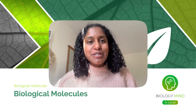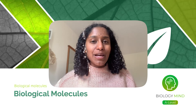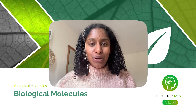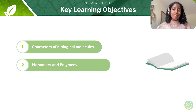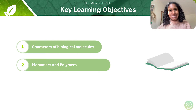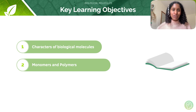Hello there everyone and welcome to this BiologyMind A-level tutorial on biological molecules. This is going to be a really back-to-basics tutorial — mostly familiar stuff building on your GCSE knowledge. We'll be covering two key learning objectives: number one, characteristics of biological molecules, and number two, monomers and polymers.